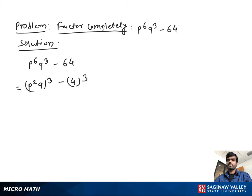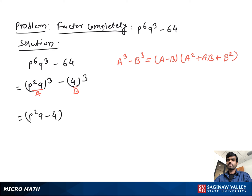Now we look for the special case of a cubed minus b cubed, where a cubed minus b cubed equals (a minus b)(a squared plus ab plus b squared). If we suppose P squared Q as a and 4 as b, then we can write (P squared Q minus 4)(P to the 4th Q squared plus 4 P squared Q plus 16), and this is our final complete factorization.